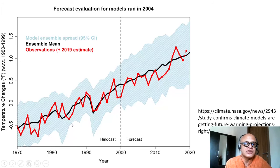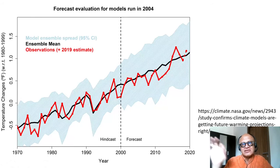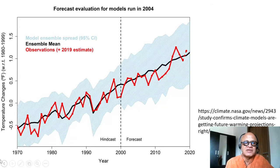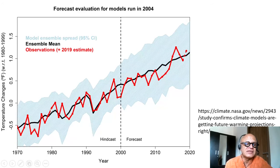This argues that models are getting good at projections, looking at the past few decades from 1970 to 2020. It looks at the model ensemble spread — you take one or multiple models and force them with all the known increases in greenhouse gases, aerosols, land use change, deforestation, agricultural activities, and so on — and you look at the range of solutions they produce for the global mean temperature trend. The red line shows observations, with an estimate added for 2018 to 2019.